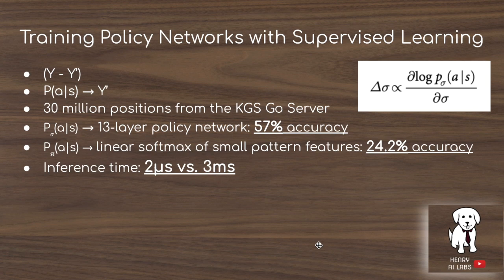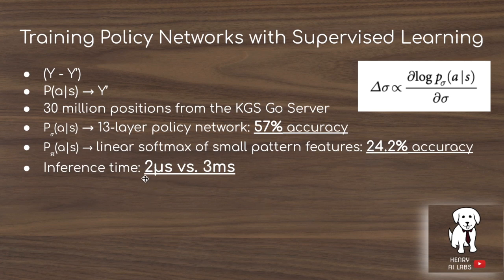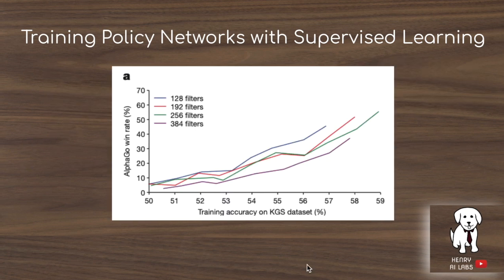The policy networks are trained with supervised learning using 30 million positions from the KGS Go server. The ground truth label is the expert move taken given the state, and the network maps from state to action. The bigger 13-layer network reaches 57% accuracy on this dataset, while the smaller rollout policy reaches 24.2% accuracy. The key difference is inference time: two microseconds for the rollout policy versus three milliseconds for the larger network. A plot shows that higher training accuracy on the KGS supervised learning dataset correlates with a higher winning rate against the final version of AlphaGo.